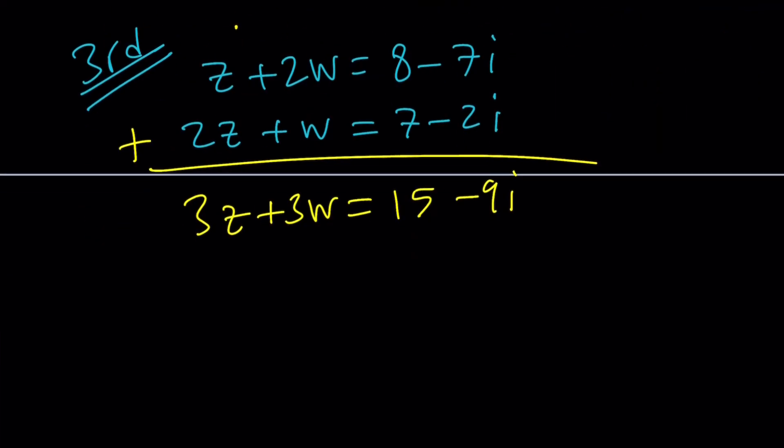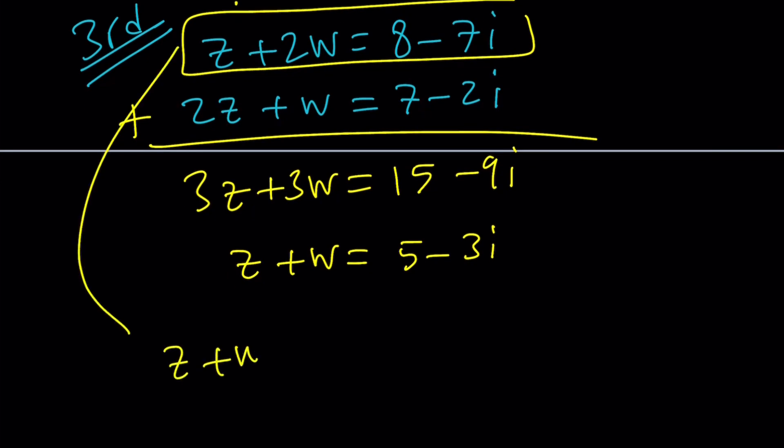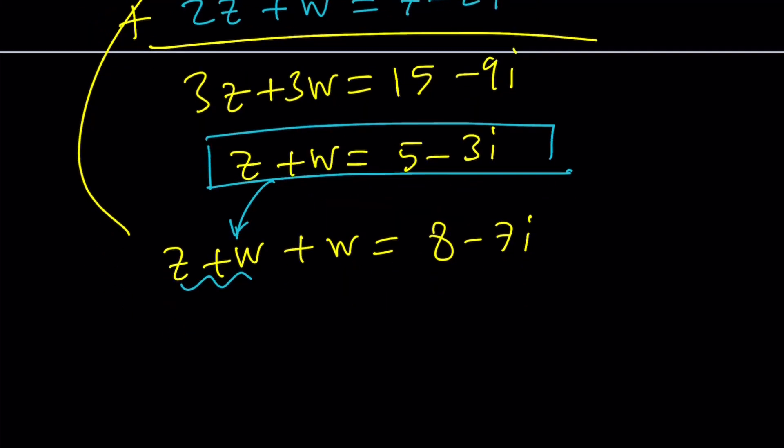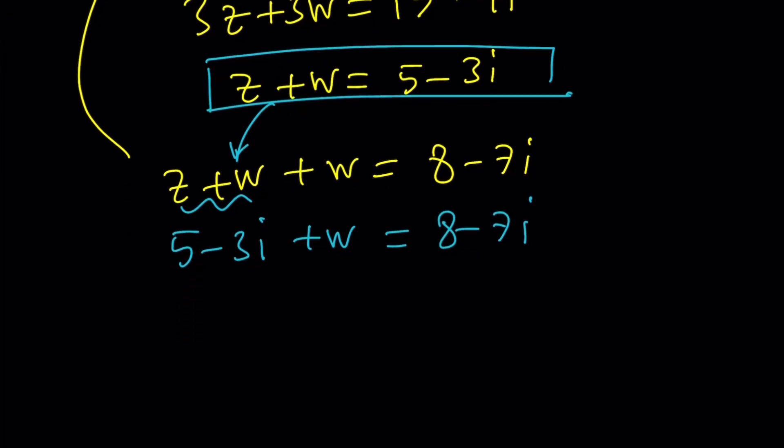That's going to give you 3z plus 3w equals 15 minus 9i. And, then you can divide both sides by 3 to get z plus w equals 5 minus 3i. So what? I just got another equation. Why? Here's the thing. Take the first equation and then write it as z plus w plus w. And, then you'll see what I mean. Hopefully. Now, z plus w is 5 minus 3i. If I substitute that, I get 5 minus 3i plus w equals 8 minus 7i. And, then, of course, you can subtract 5 minus 3i. And, w will be 3 minus 4i. Make sense? Does that look familiar?